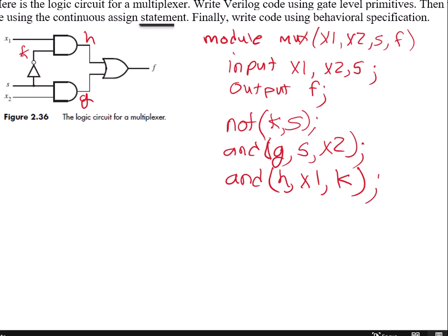And then my last gate is or. And my output for my or is f. And my inputs are h and g, semicolon. And then end module.